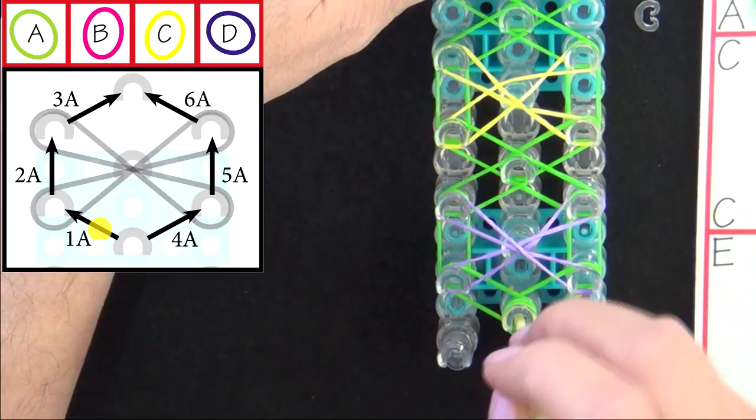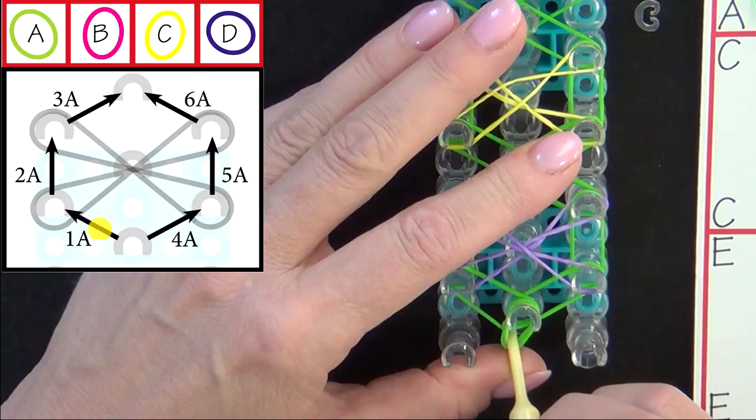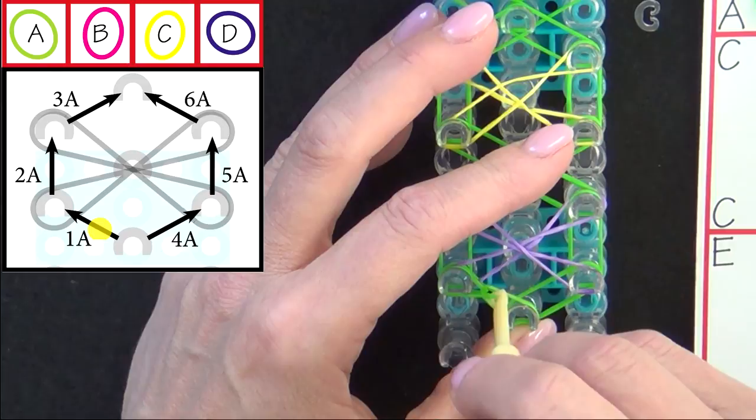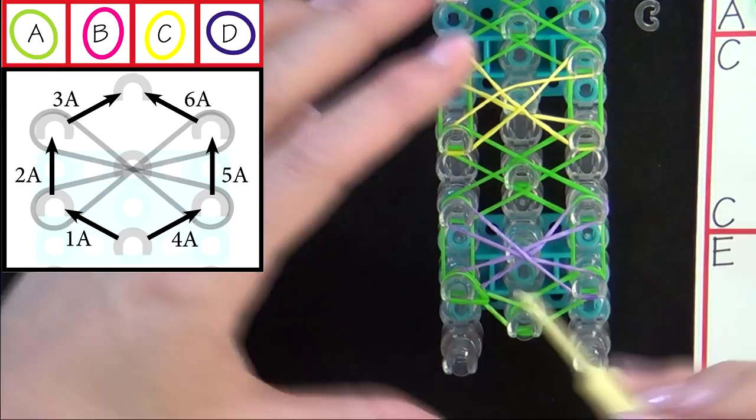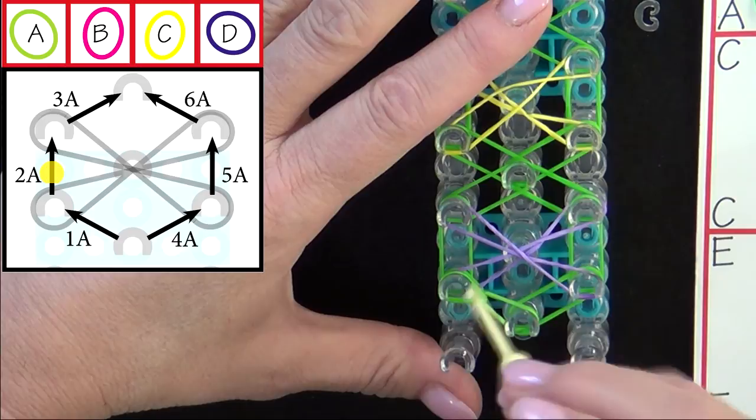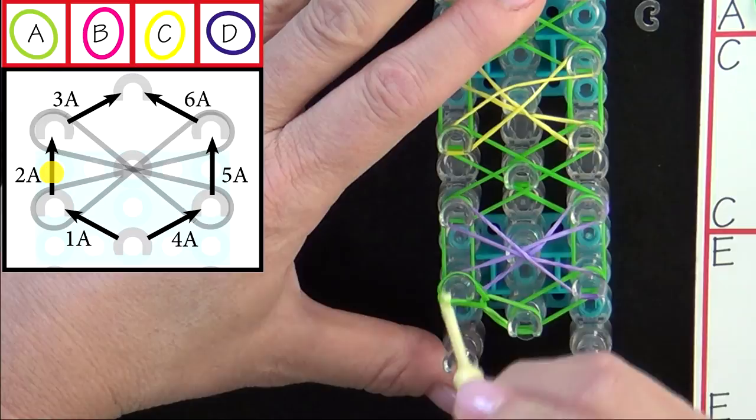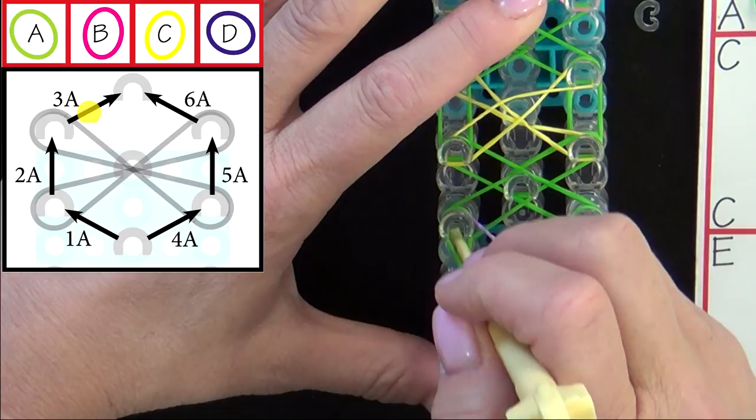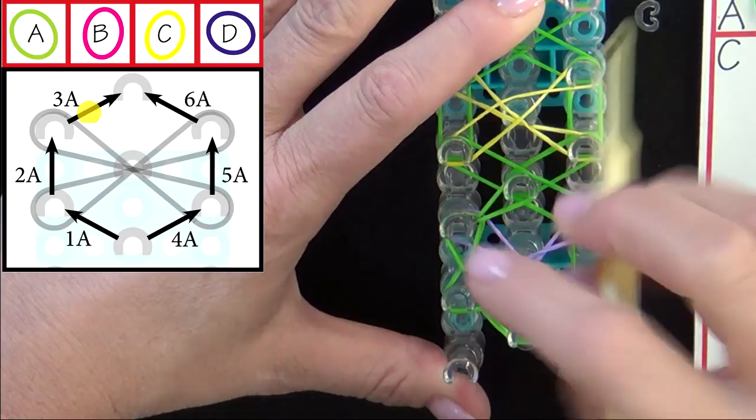We'll start from the center pin, pull back the cap band, we'll be looping this band, so you reach in and grab the top A band and pull it out to the left. It should form this teardrop if you've grabbed the right band. Next we'll loop band 2A. There is this band here that we'll pull back to get to the 2A band, it's the bottom A band on that pin, and pull it forward. 3A will be looped to the center. You pull all the bands above that bottom A band back, and loop that band to the center.